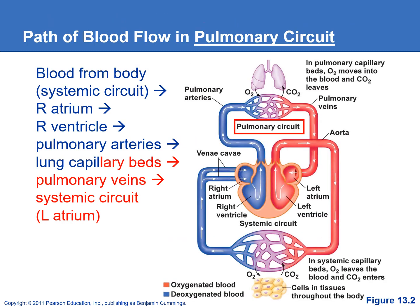The pulmonary circuit starts on the right side of the heart. We're going to be pumping deoxygenated blood that's been returned from the body, and we'll pump it out through the pulmonary arteries to the lungs, where we do gas exchange in the lung capillaries — picking up the oxygen and dropping off the carbon dioxide. Then the oxygenated blood flows through the pulmonary veins and is returned to the left side of the heart.